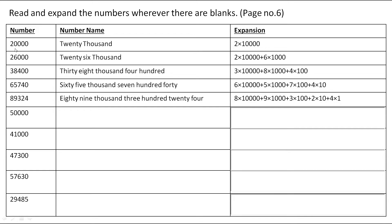The first number is 20,000. The name of this number is twenty thousand, and the expansion is 2 × 10,000. They have multiplied 2 with 10,000 because 2 is on the place of 10,000.